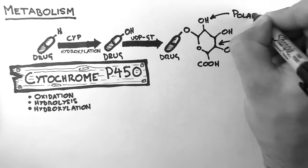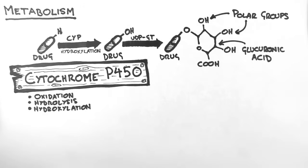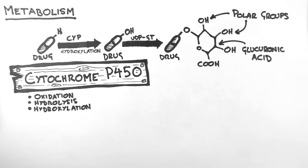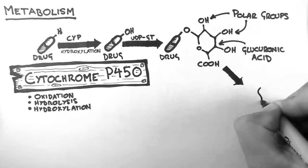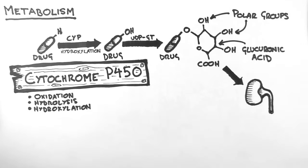The glucuronic acid group has many polar groups attached to it, namely three hydroxyl groups and a carboxylic acid group. This makes the molecule extremely water soluble, or hydrophilic. Thus the drug can be easily filtered and excreted by the kidneys.